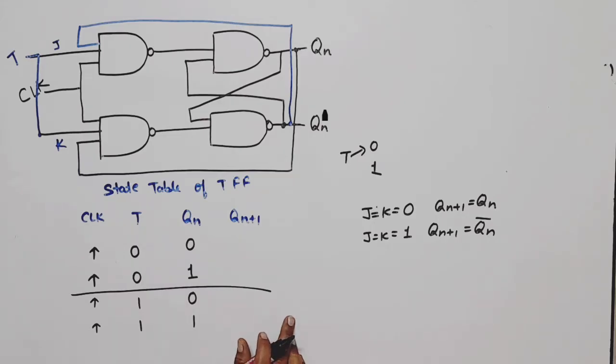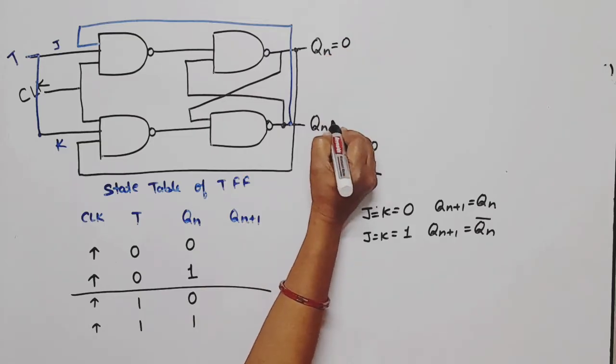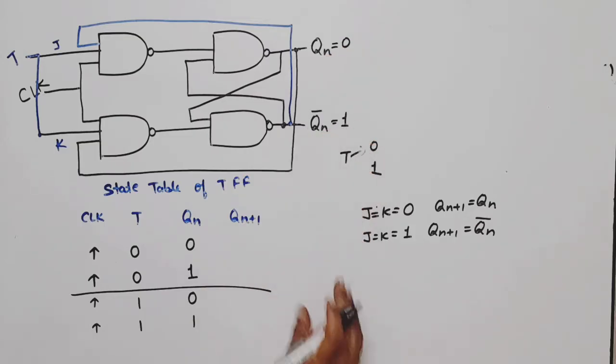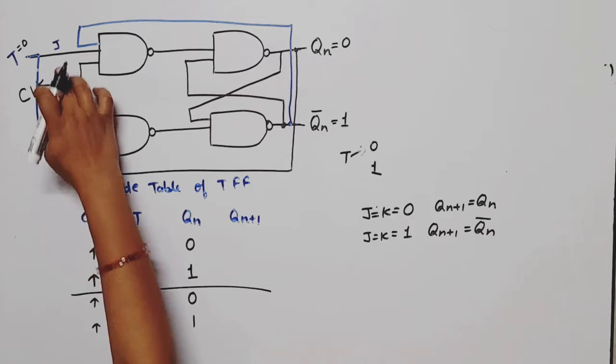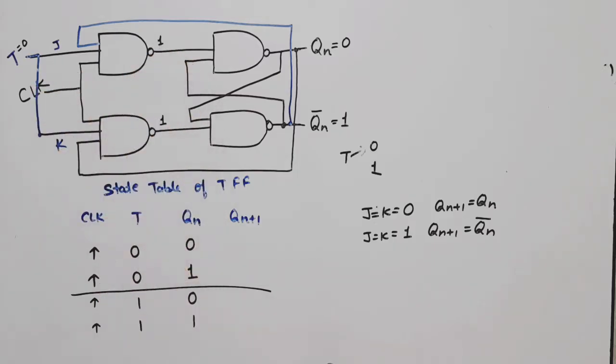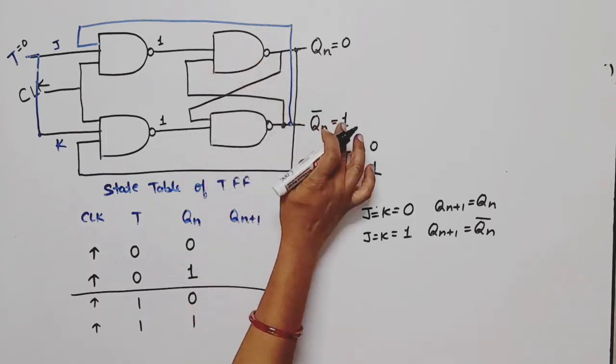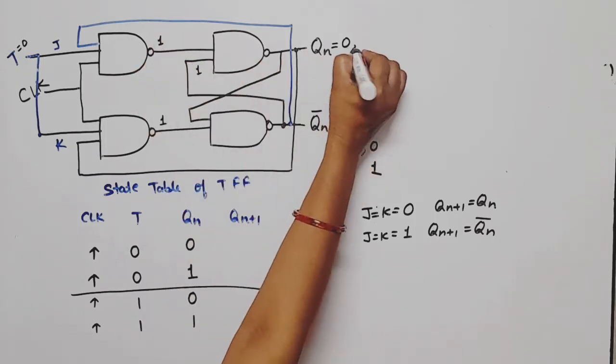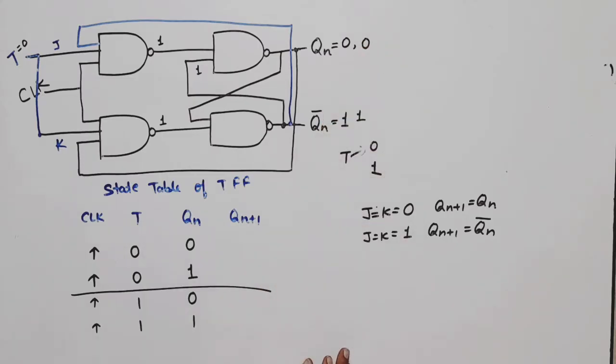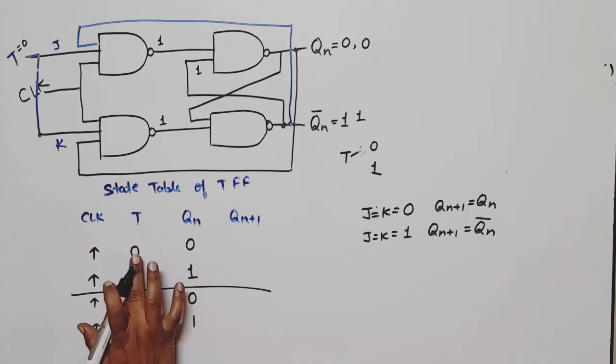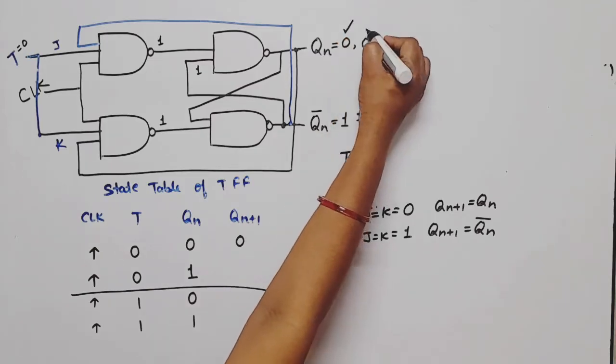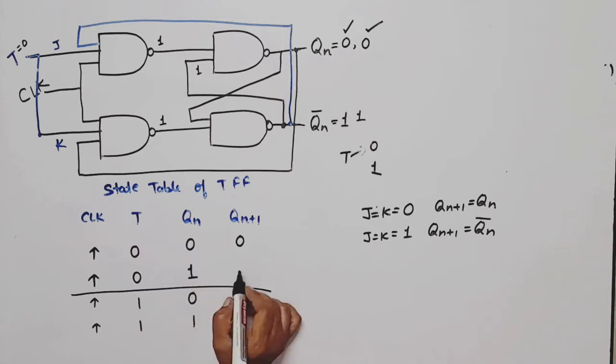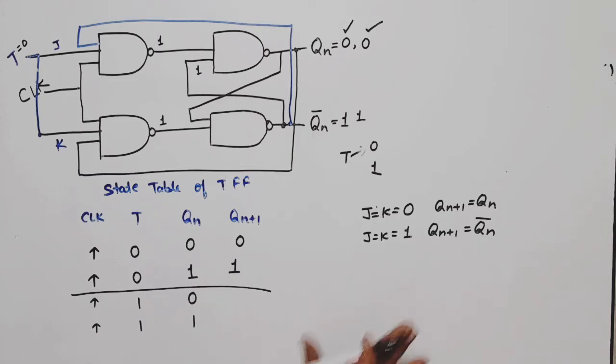Let me verify this. For example, let the value here be zero, then obviously QN bar will be one. Now if T is zero, these are NAND gates, so on both inputs we have zero, zero, meaning here one or one will be applied. With one and one combination for this flip-flop, we will get zero here, and if this is zero, then obviously here it will be one. So the first case is verified - if T is equal to zero and present state was zero, then next state will be zero.